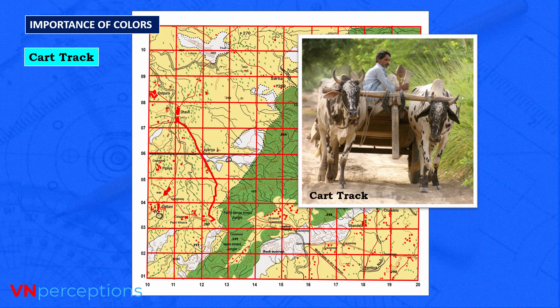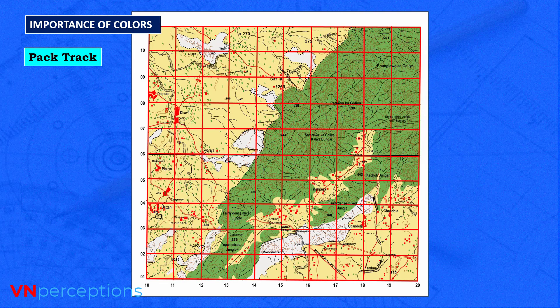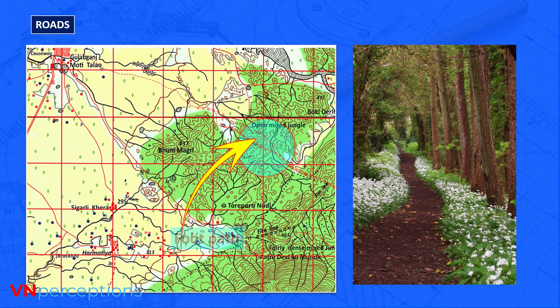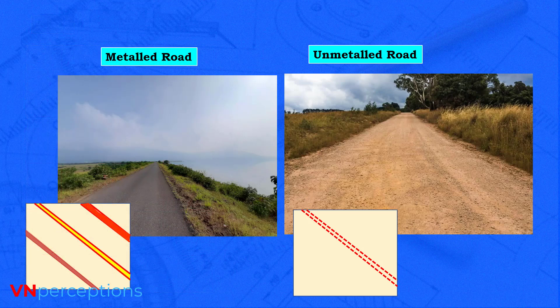You will always see plenty of metal roads as well as cart tracks in any topo map. Apart from that, there are pack tracks, shown with a thin red dashed line. Pack tracks are used by animals — especially mules and donkeys — for carrying loads. If you see thin red dashed lines in the topo map, those are pack tracks. Dotted lines, on the other hand, represent footpaths. The difference is: pack tracks are dashes and footpaths are dotted lines. Within a forest area, for example, there can be a footpath shown in the map.